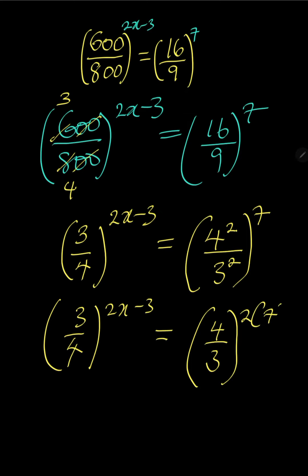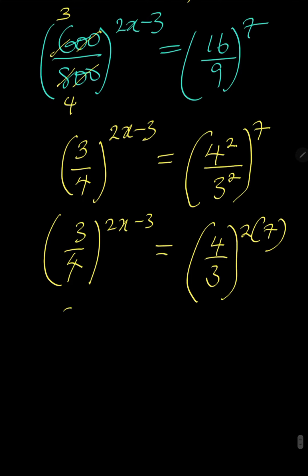It multiplies 7. So we have 3 all over 4 to the power of 2x minus 3 is equal to 4 over 3 to the power of 14. 2 times 7 is 14.